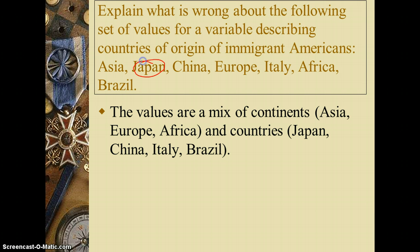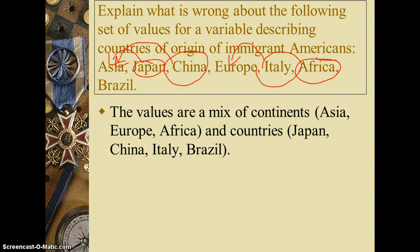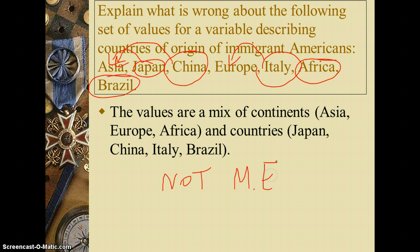For example, Japan is in Asia. China is in Asia. Italy is in Europe. Africa is a continent. Brazil is a country. There are lots of problems — this is not mutually exclusive.